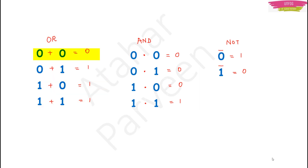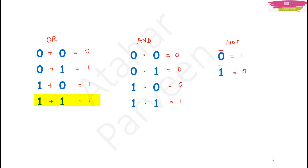If OR is there, you are just adding those values. 0 plus 0 will be 0. 0 plus 1 will be 1. 1 plus 0 will be 1. And 1 plus 1 — in digital electronics, there is no place for 2. We are talking only about 0 and 1, so 1 plus 1 will be 1 only. It means the output is high, and high is denoted by 1. There is no place for 2 here.